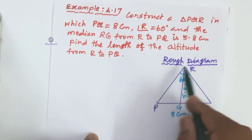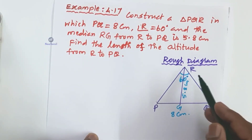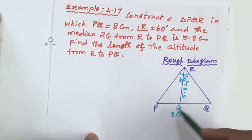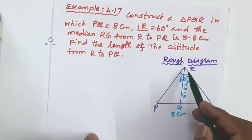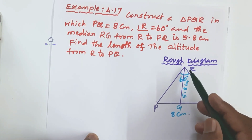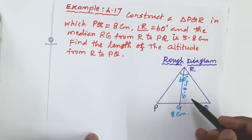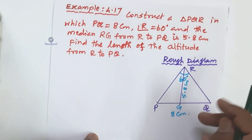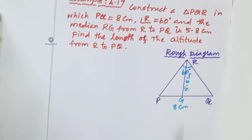We will first mark the rough diagram. In the rough diagram, PQR is the triangle. The vertical angle is R, the base is PQ which is 8 centimeters, the vertical angle R is 60 degrees, and the median is RG. The length of the median RG is 5.8 centimeters.